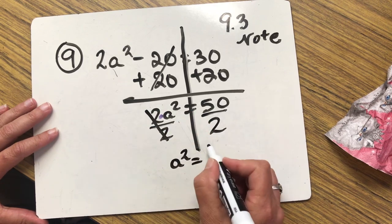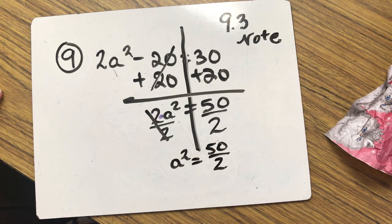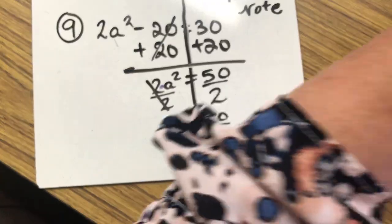A squared equals, now if you left it right here, you're like, wait a minute. 50 is not a perfect square. True, 50 is not a perfect square.